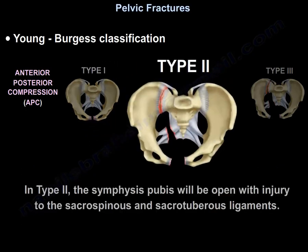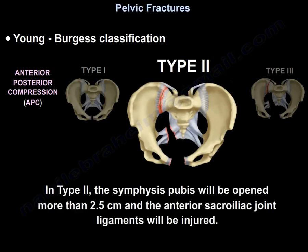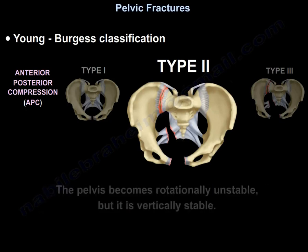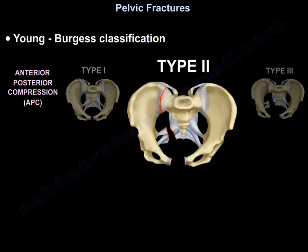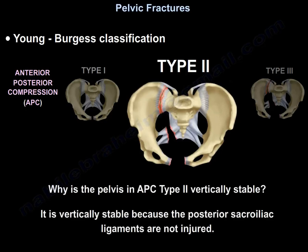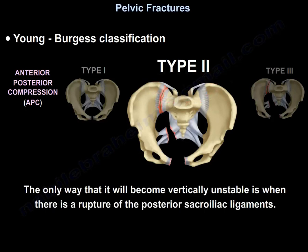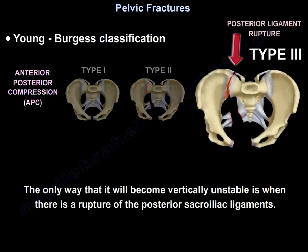In APC type 2, the symphysis pubis will be opened and the sacrospinous and sacrotuberous ligaments will be injured. The symphysis pubis will be opened more than 2.5 cm and the anterior sacroiliac joint ligaments will be injured, so the pelvis becomes rotationally unstable but vertically stable. It is vertically stable because the posterior sacroiliac ligaments are not injured. The only way it will become vertically unstable is when there is rupture of the posterior sacroiliac joint ligaments.